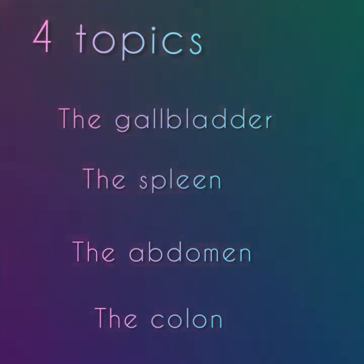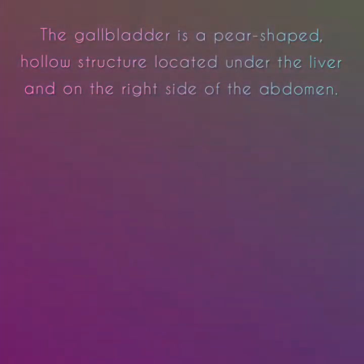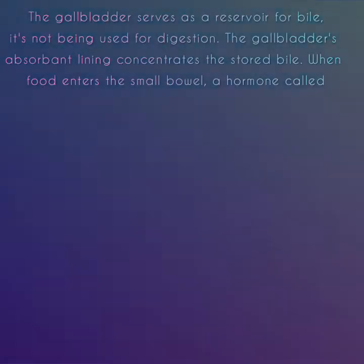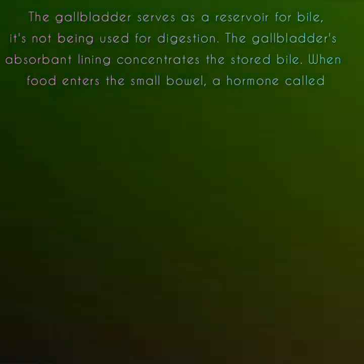First we will start with the gallbladder. The gallbladder is a pear-shaped hollow structure located under the liver and on the right side of the abdomen. Its primary function is to store and concentrate bile, a yellow-brown digestive enzyme produced by the liver. The gallbladder serves as a reservoir for bile while it's not being used for digestion.